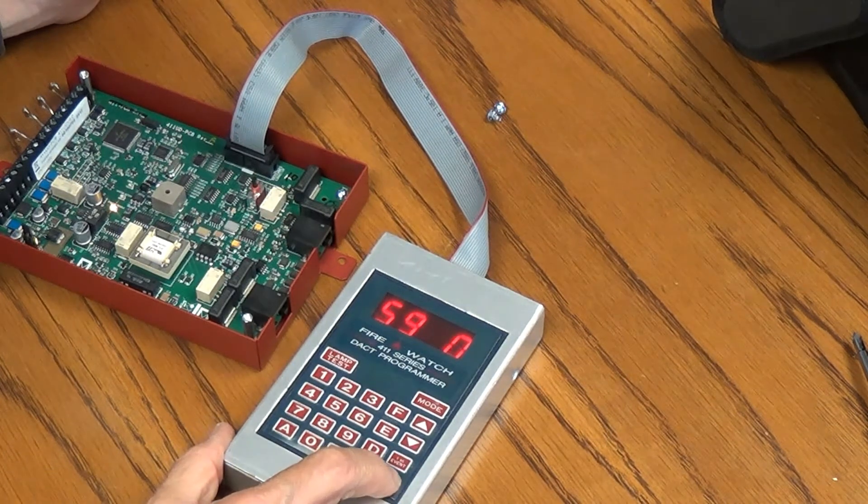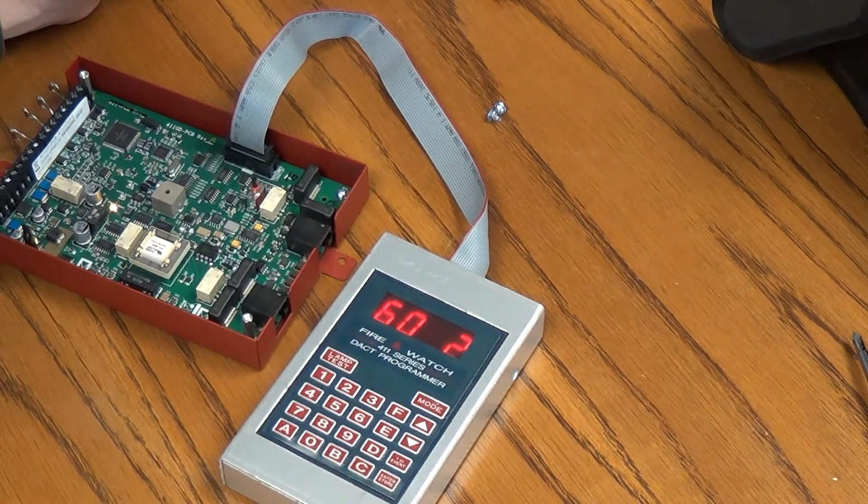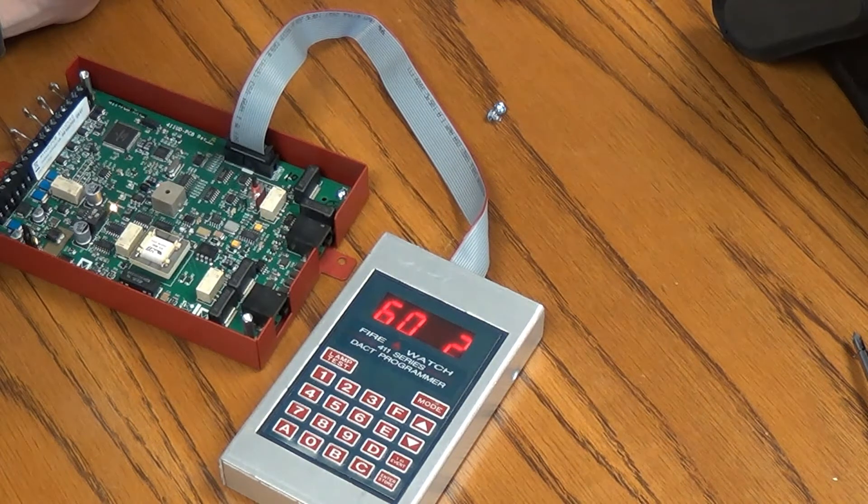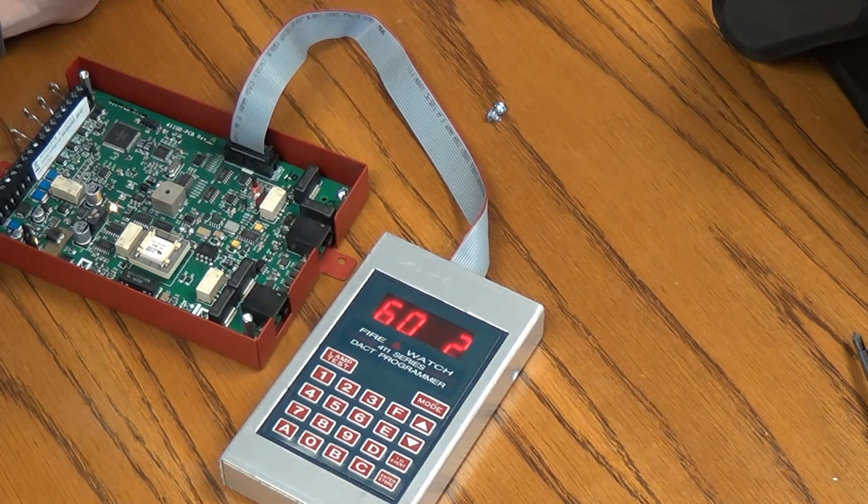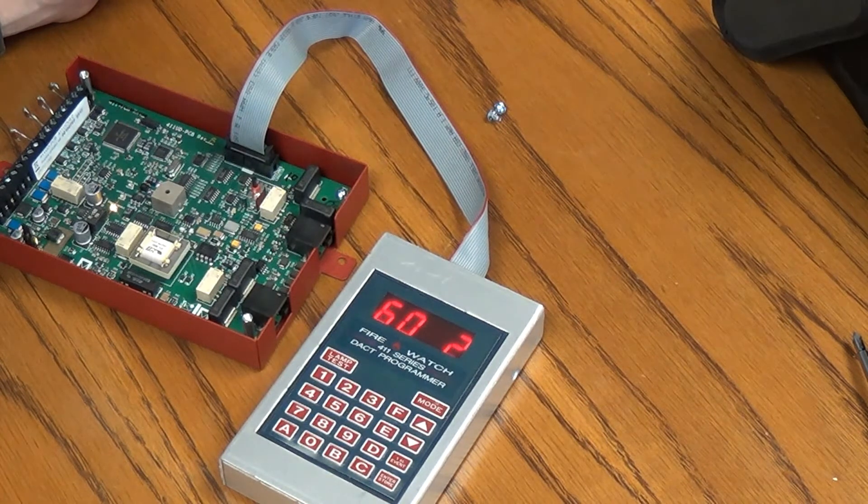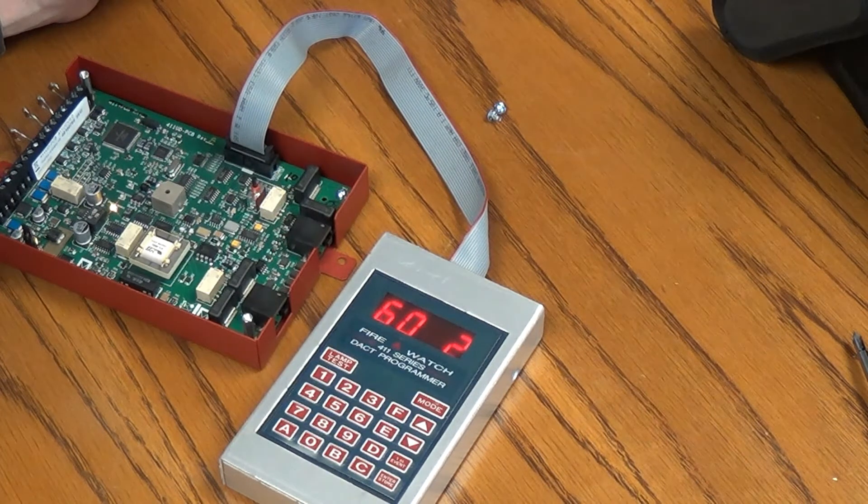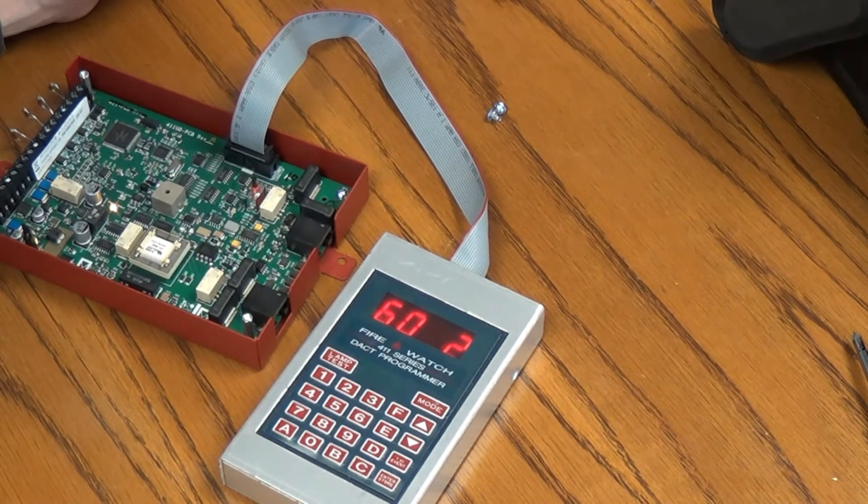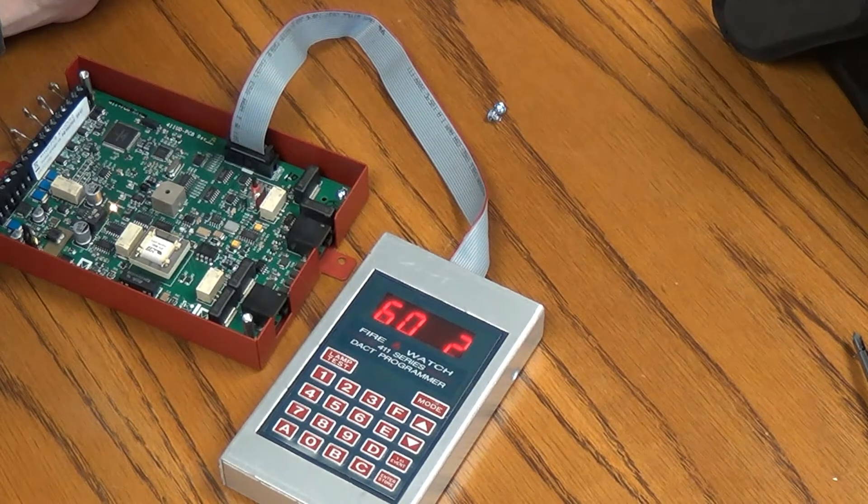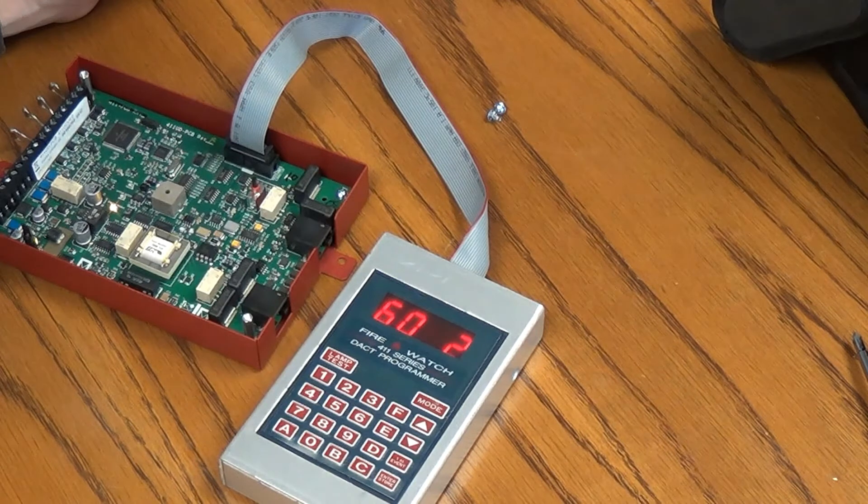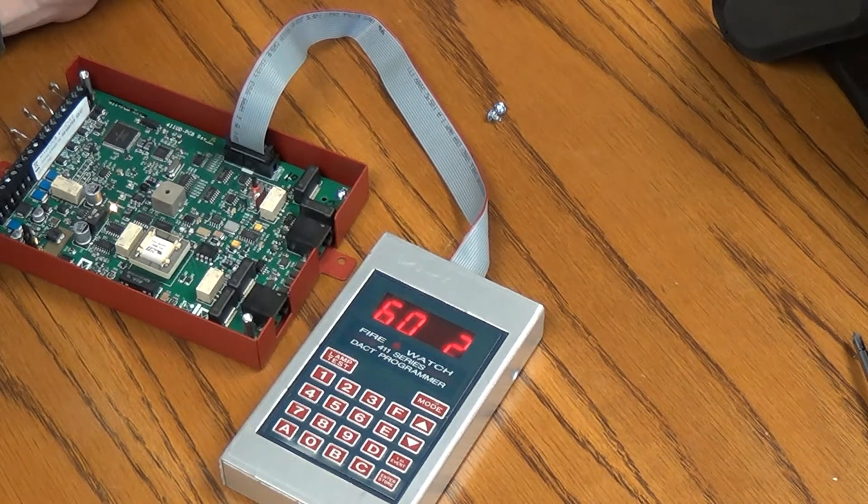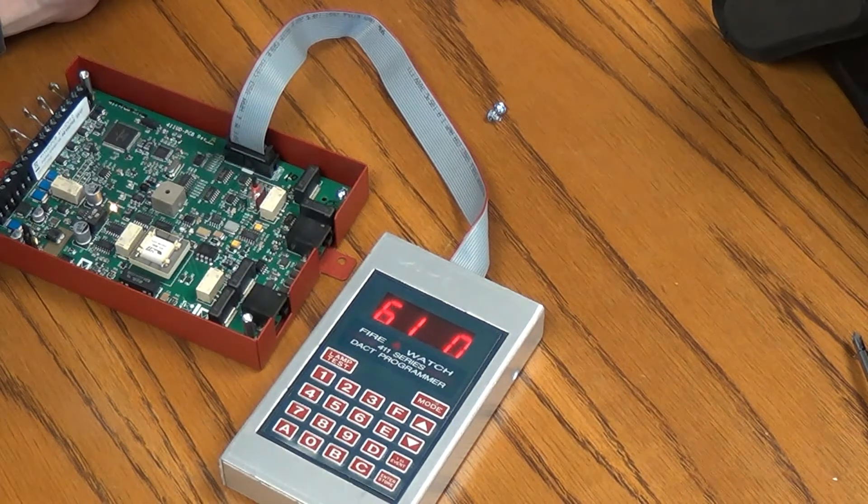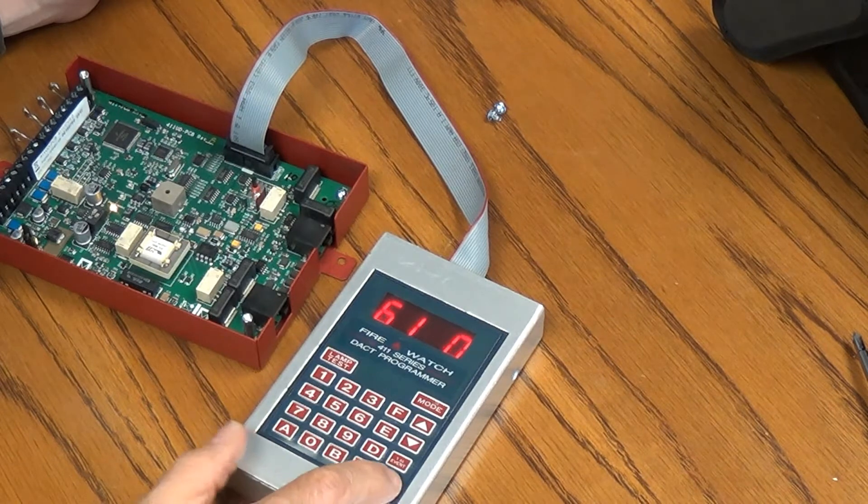The next one is 60, and 60 is power loss reporting delay. In other words, if it loses power, how long do we want it to wait before it sends a trouble signal? We have test intervals, either 0 for no delay, 1 for 1 hour, 2 for 2 hours, 3 for 6 hours, et cetera. Well we don't want any delay. If it loses power, we want to know about it. So we're going to enter a 0 here and press Enter. So we're at 61 now, which just remains as a 0.